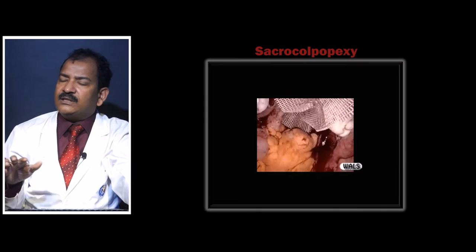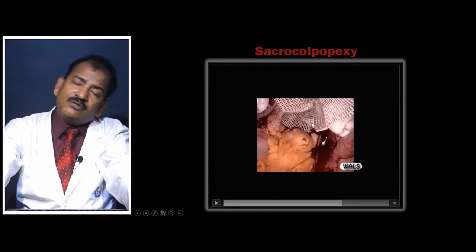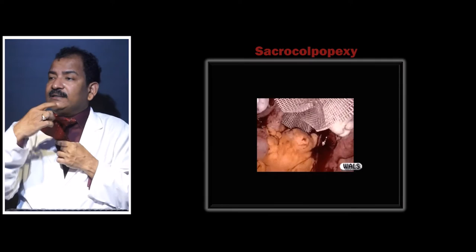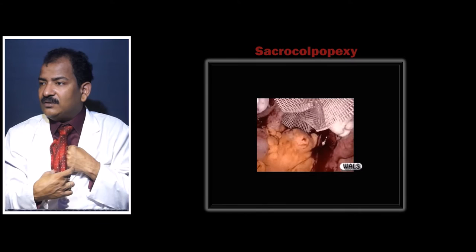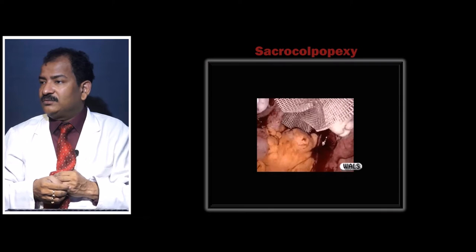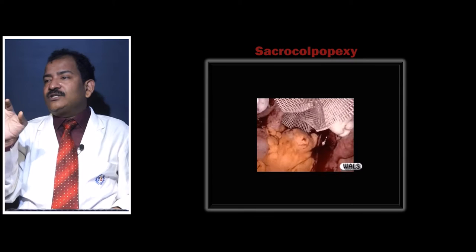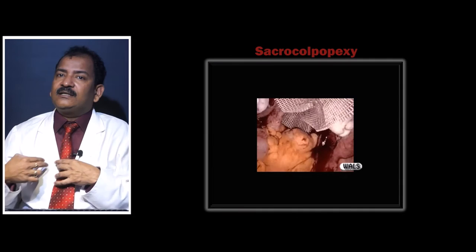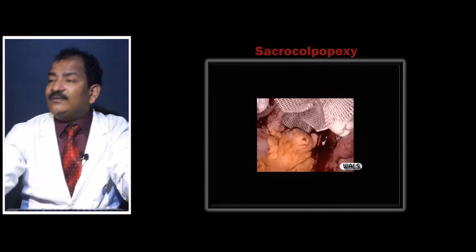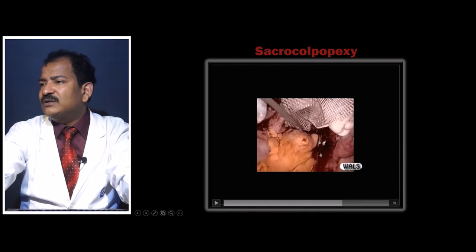So cystocele, uterine prolapse, and rectocele can all be treated. You can also use separate meshes, but the advantage of folding is that the loop is fixed to the sacral promontory. Two meshes are needed because the mesh encircling anteriorly can cure the cystocele but cannot cure the rectocele — the mesh folded back posteriorly is what cures the rectocele. The anterior mesh alone cannot cure any rectocele.